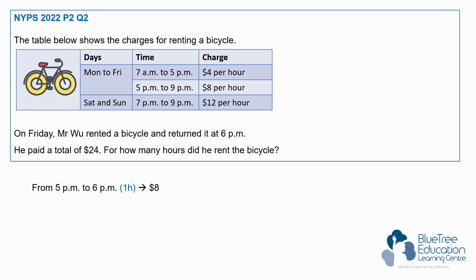Before that, it is charged at $4 per hour. So we take $24, minus the $8, and we are left with $16. We then take this $16 and divide it by $4, to find the number of hours he rented the bike between 7am and 5pm. We get 4 hours.